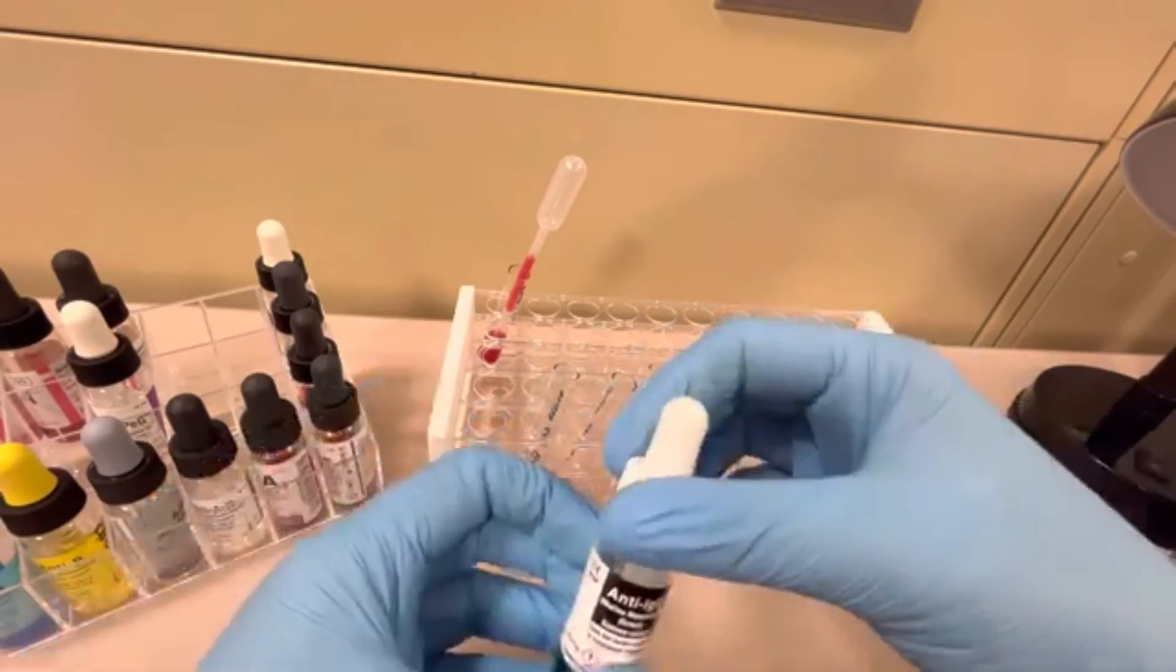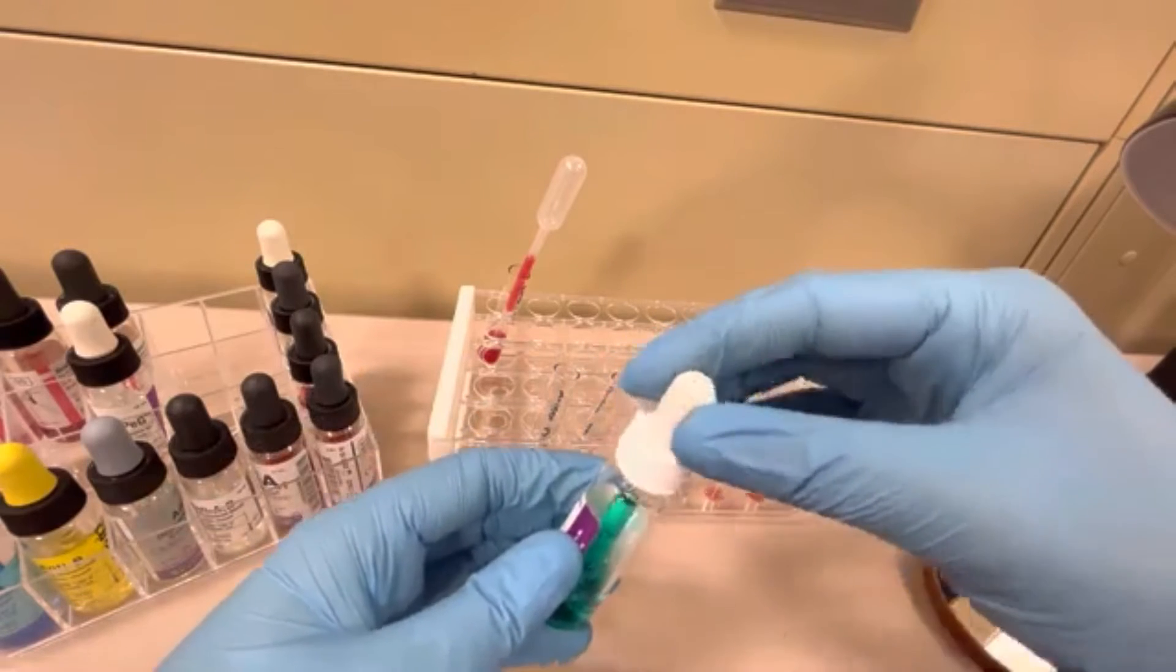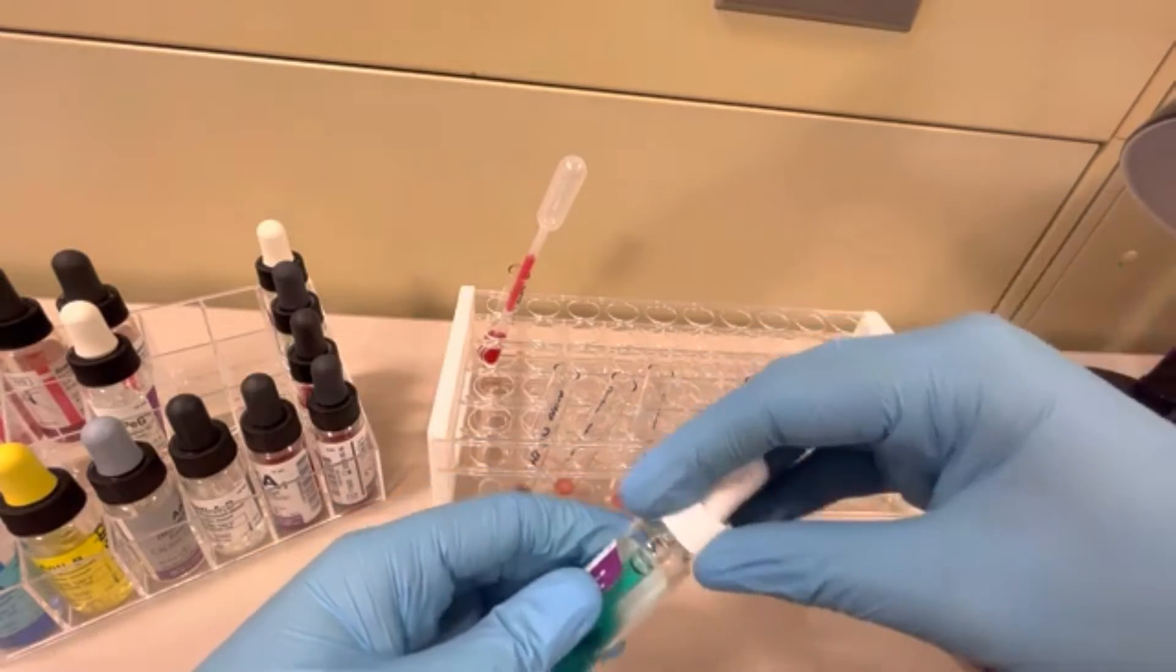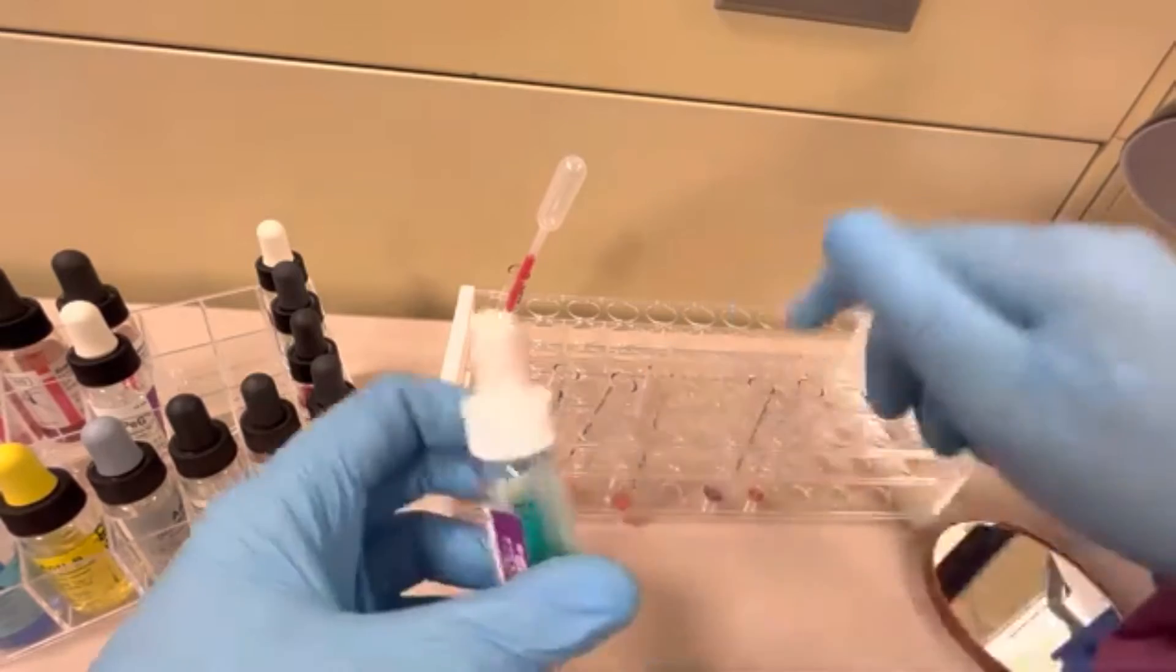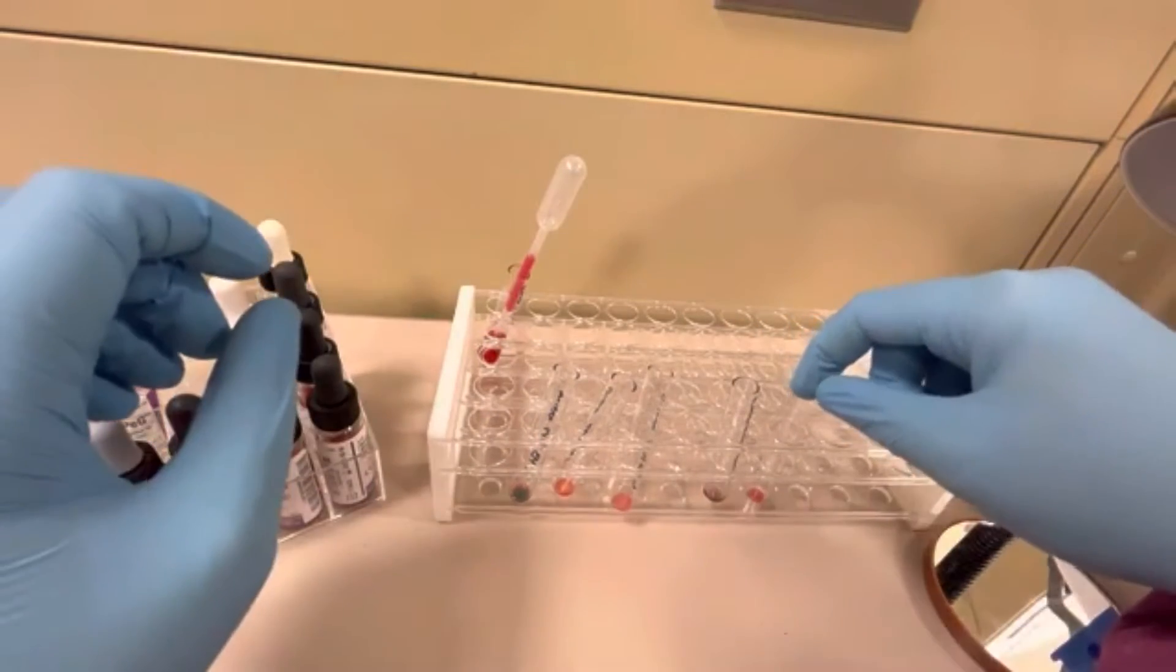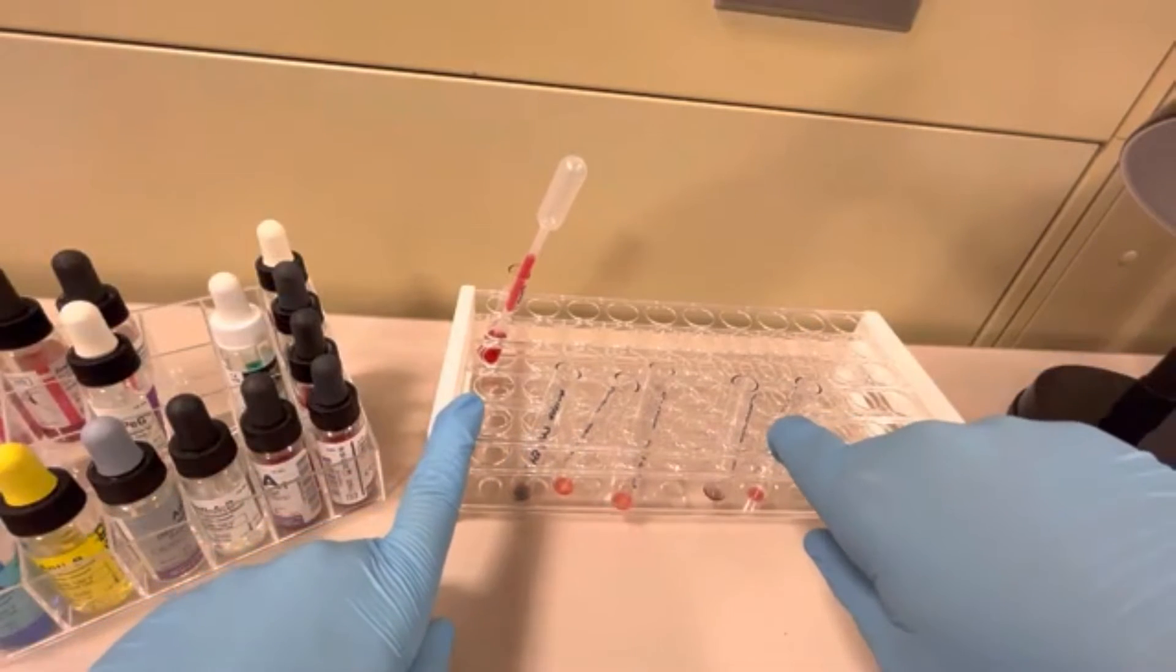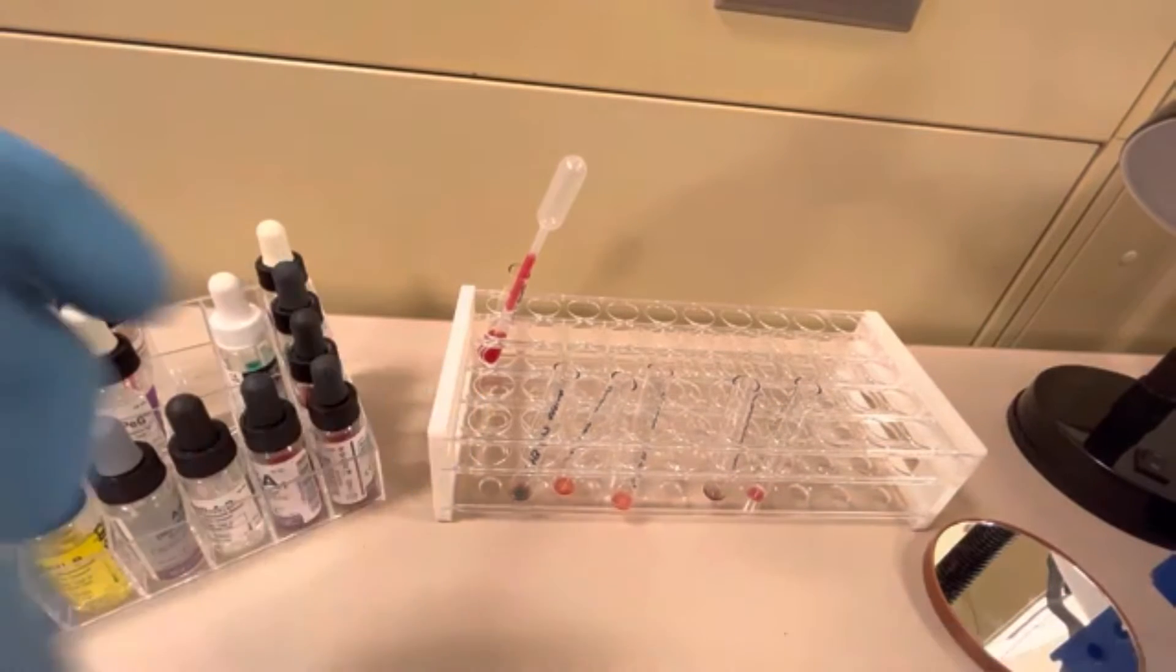And then the next tube is my DAT tube. I'm going to get a monoclonal anti-IgG, an AHG which is anti-human globulin, and I'm going to put two drops in there. I'm not going to put anything in here. It's just saline and a little bit of saline that's left over from the wash and then the red cells. And then what I'm going to do is spin all these for 15 seconds. I'm going to get my result sheet here and we'll be back in just a moment.